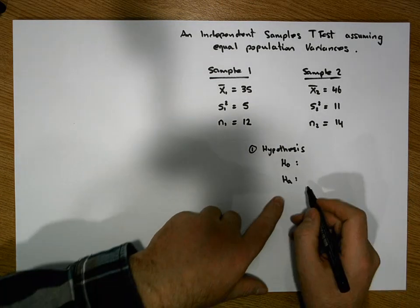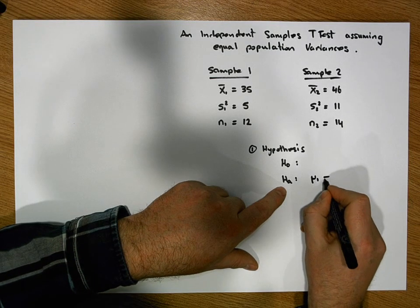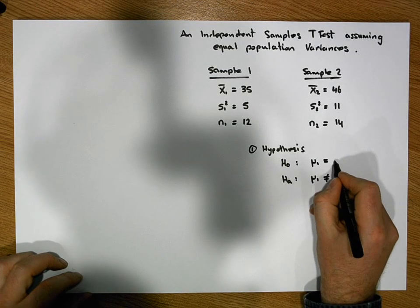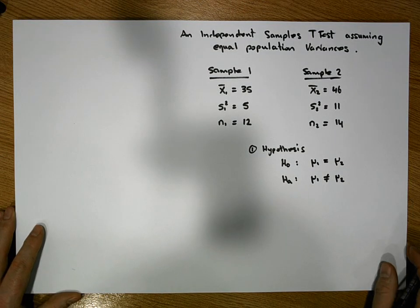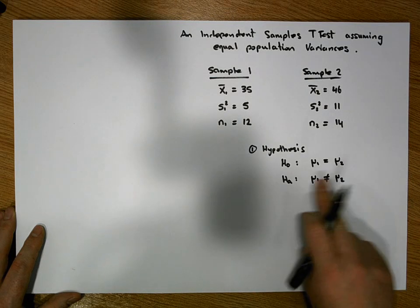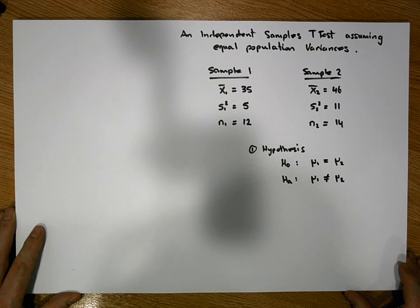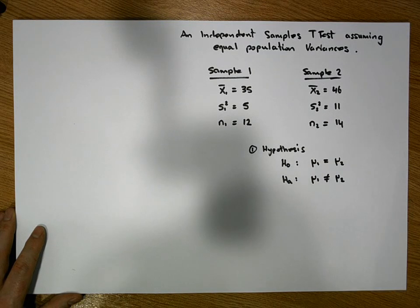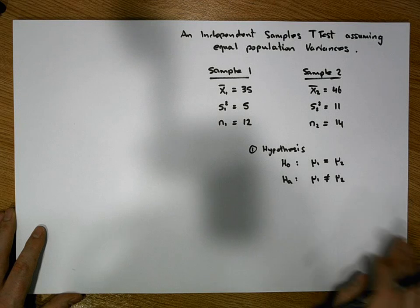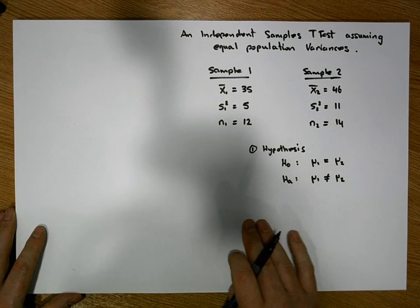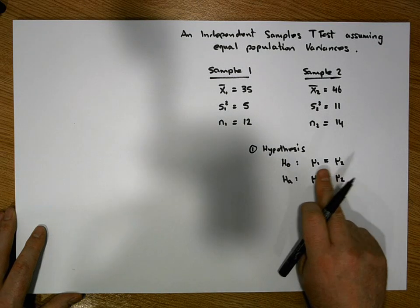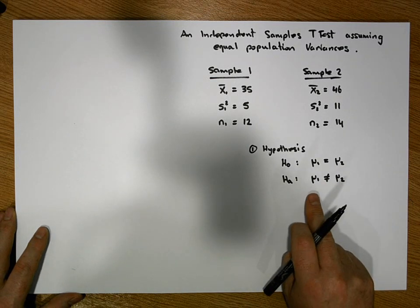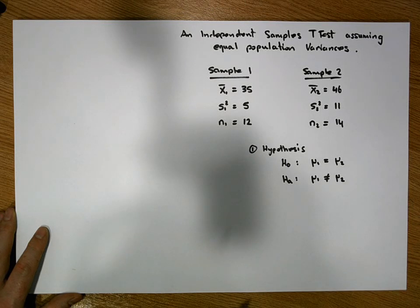I want to test whether the population means are different — whether mu1 is different to mu2. So the null position is that we assume the population means are equal. In a later video, I will do variants where we assume directionality, hypothesizing that the mean of the first population is greater than or less than the second. At this stage, we're just doing the straightforward version where the populations have the same mean value. The alternative simply requires one to differ from the other, making this a two-tail test.